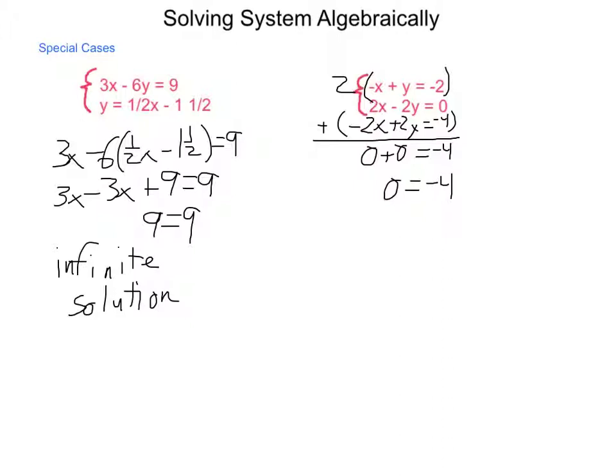Here, like the last equation system, we have a sentence, a mathematical sentence, involving no variables, but this one is not true. 0 is not equal to -4. So what this means is that there is no solution. Graphically, this would be a set of parallel lines, so they will never have a point of intersection. Algebraically, we end up with a sentence that is not true.